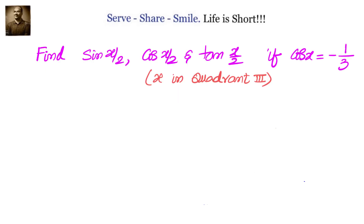Find sin(x/2), cos(x/2), and tan(x/2) if cos(x) is given as -1/3 and x is in quadrant 3. We have been given that x is in quadrant 3 and cos(x) = -1/3. We have to find sin(x/2), cos(x/2), and tan(x/2). First, let's write down the formulas.